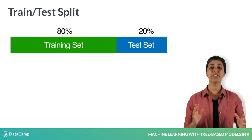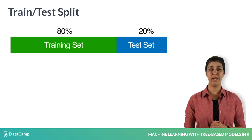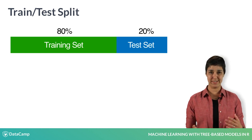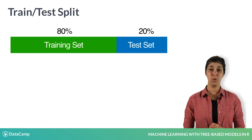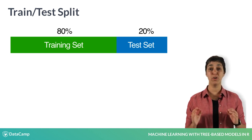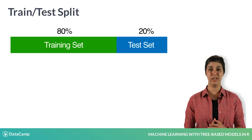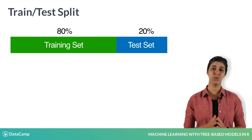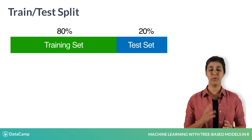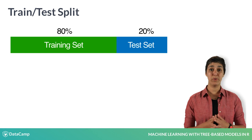Of course, there can be a lot of variation depending on which 80% of the data you select for the training set. One way to reduce this variation is by using cross-validation. We'll talk about that later in the course, but right now, let's learn how to do a train-test split in R using the restaurant dataset.